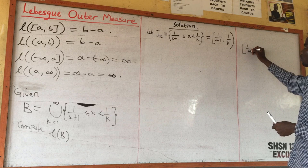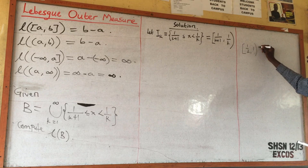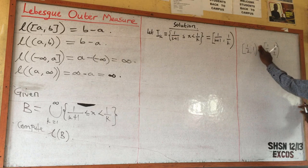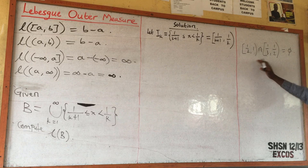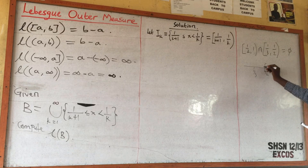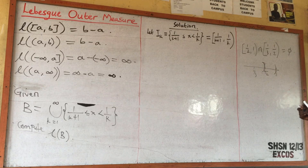Since it's closed on the left and open on the right, the intervals are disjoint. For example, when k=1 this gives [1/2, 1), and when k=2 it gives [1/3, 1/2). If you take the intersection of these two, it is empty because there is no point of intersection between them — one ends at 1/2 (open) and the other starts at 1/3 (closed).